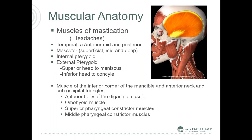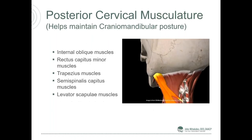A lot of TMJ patients have discomfort in the back of their heads. The internal oblique, rectus capitis minor, trapezius, semispinalis capitis, and levator scapulae muscles are all inserted in the rear of the head from behind the mastoid process to the center. They help determine your head position, anterior and posterior, and your cervical cranial stability. The position of the head, the neck, and the jaw are all interrelated.